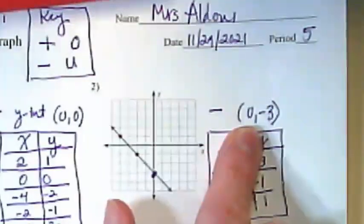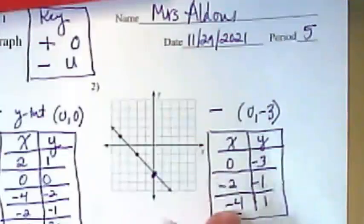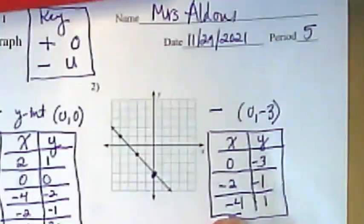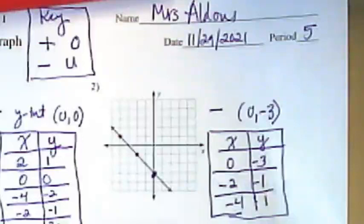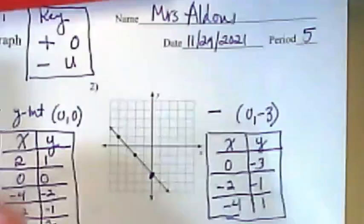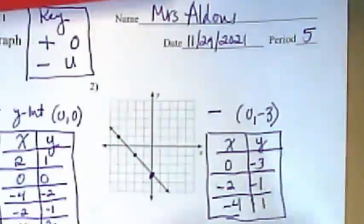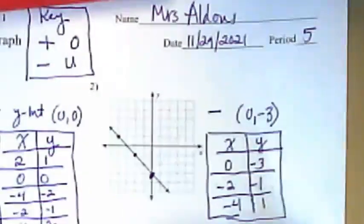We found the y-intercept, and we found as many ordered pairs as we could from that line. But what we really want to find for this is the slope and then the equation.